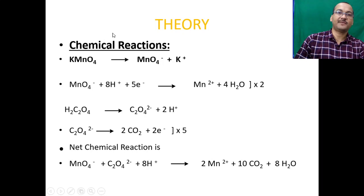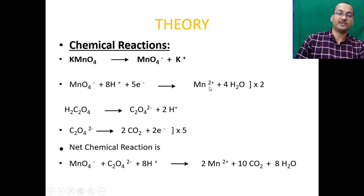The basic principle of this redox titration: potassium permanganate ionizes to give MnO₄⁻ ion and K⁺ ion. In the presence of H⁺ from sulfuric acid, the MnO₄⁻ ion accepts five electrons to be reduced to Mn²⁺. The oxidation state of manganese goes from +7 in MnO₄⁻ to +2 in Mn²⁺.